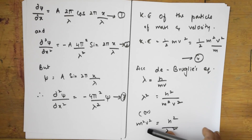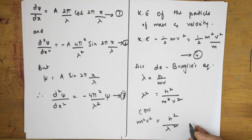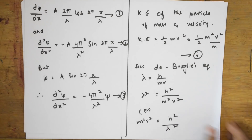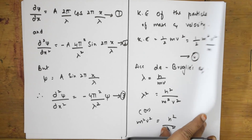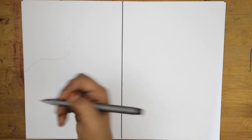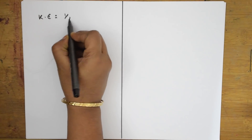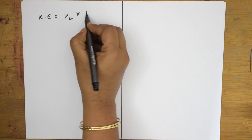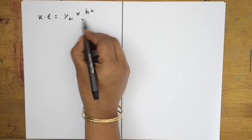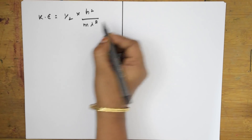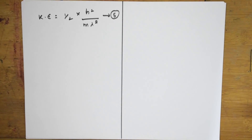I took out m²v² because it appears in the kinetic energy equation and can be substituted there. Substituting into the kinetic energy equation: KE = h²/(2mλ²). Let us call this equation five.